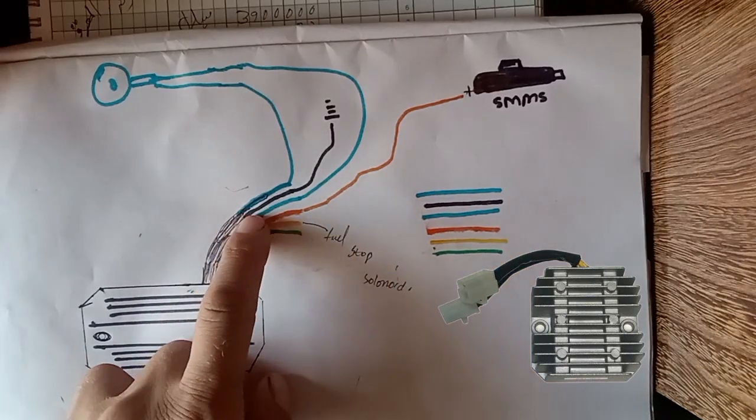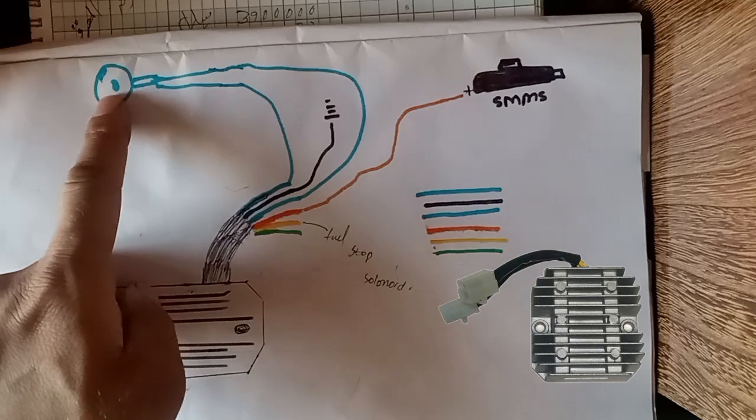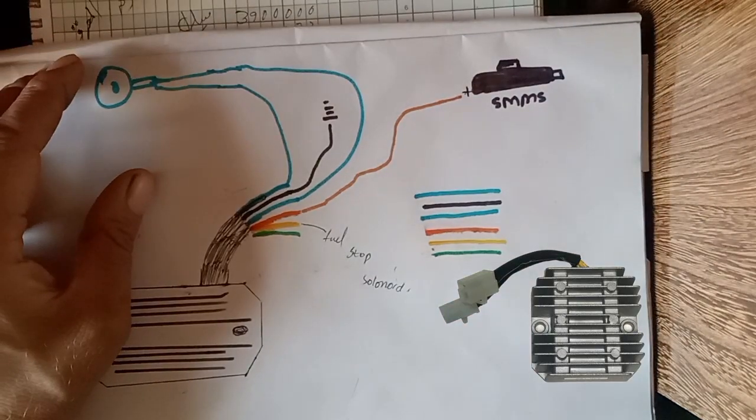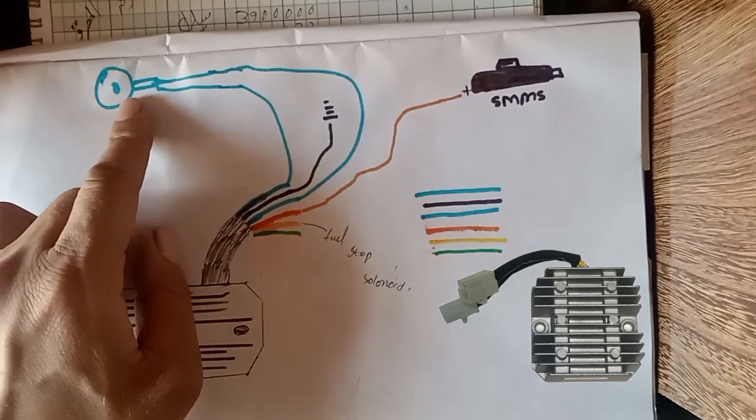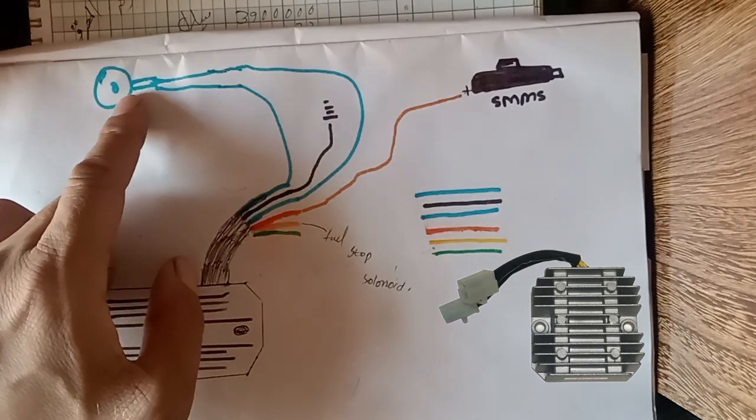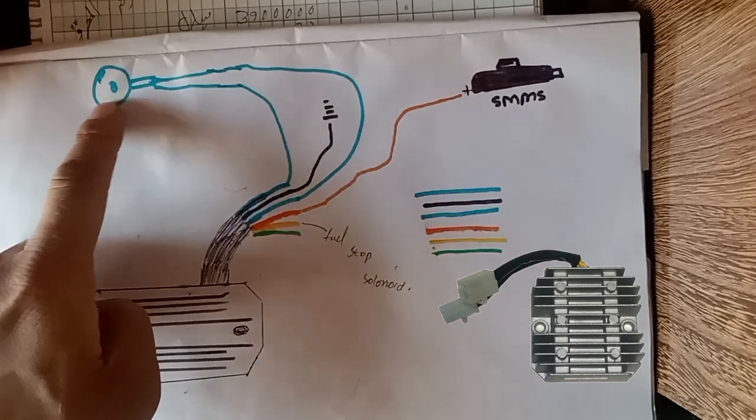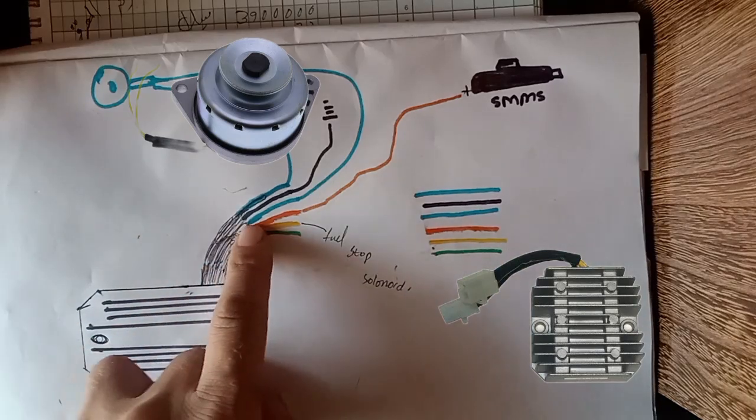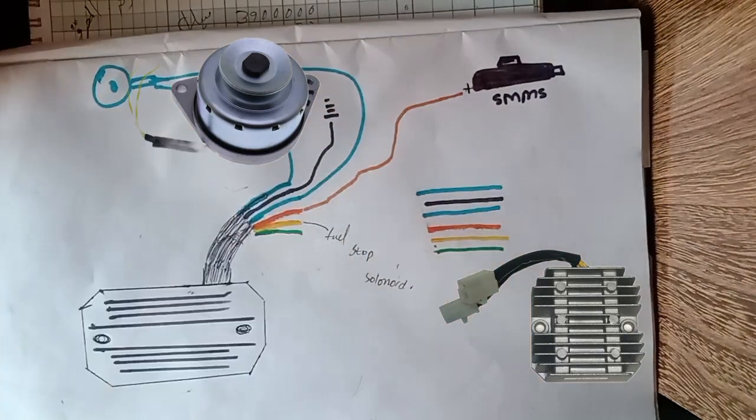The two blue wires are directly going to the AC charging alternator. The charging alternator only has one connector with two wires. These two wires connect with the two wires of the charging alternator, as you can see here.